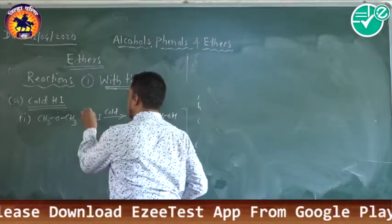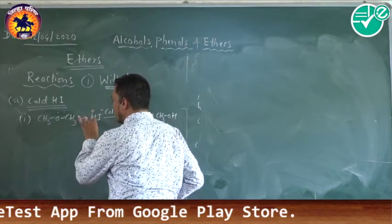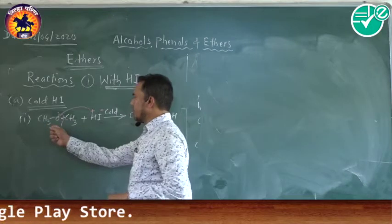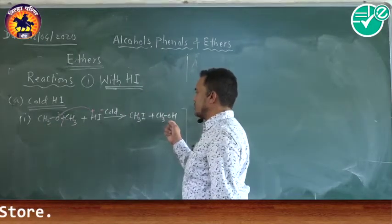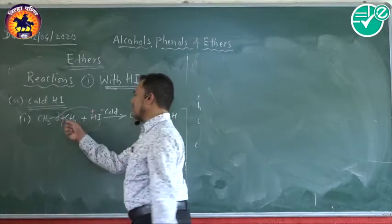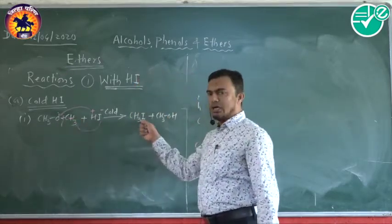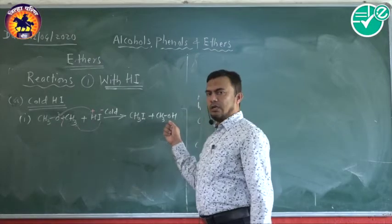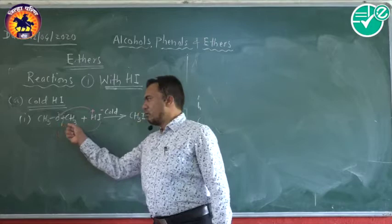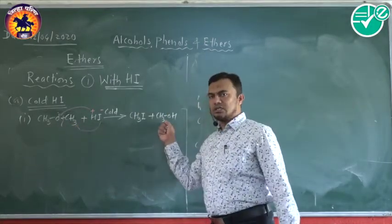H+ and I- are formed, where H+ goes with the oxygen. Cleavage takes place, giving CH3OH and I- with the methyl group, which is positively charged. We get the formation of methyl iodide and methyl alcohol. In short, with a simple ether we get one alkyl iodide and one alcohol.